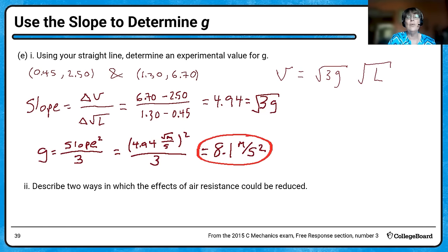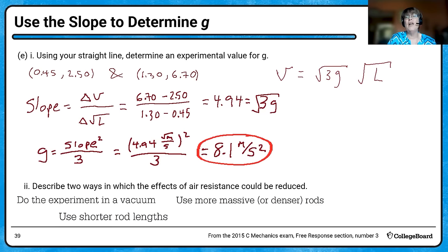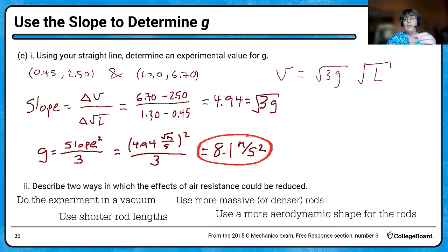To reduce air resistance, you could do the experiment in a vacuum, use shorter length rods to decrease air effects, use more massive or denser rods, or use a more aerodynamic shape — instead of something square or rectangular in cross section, use something circular in cross section.